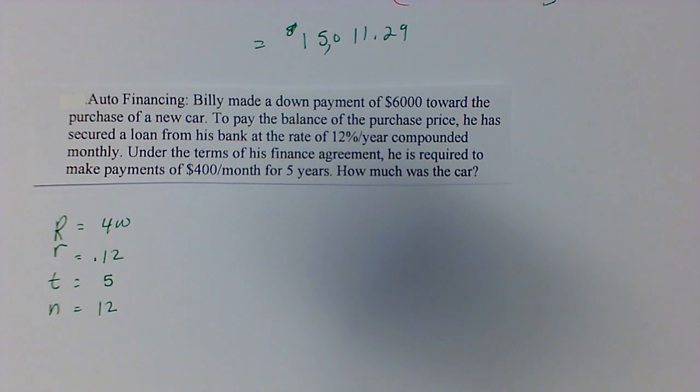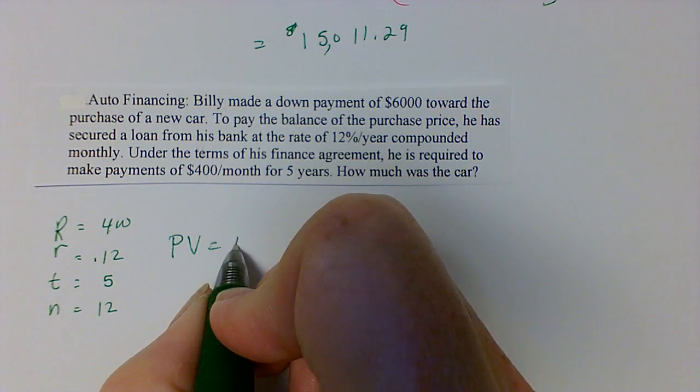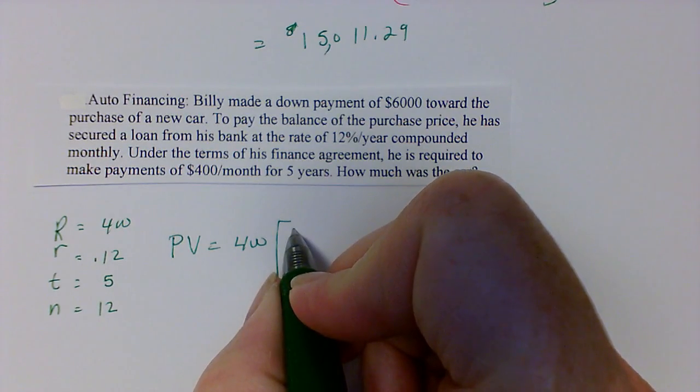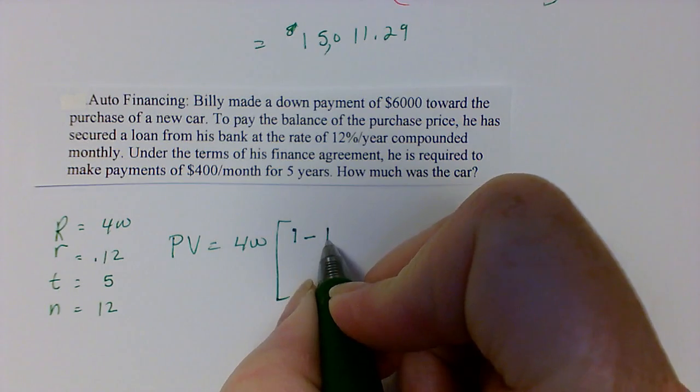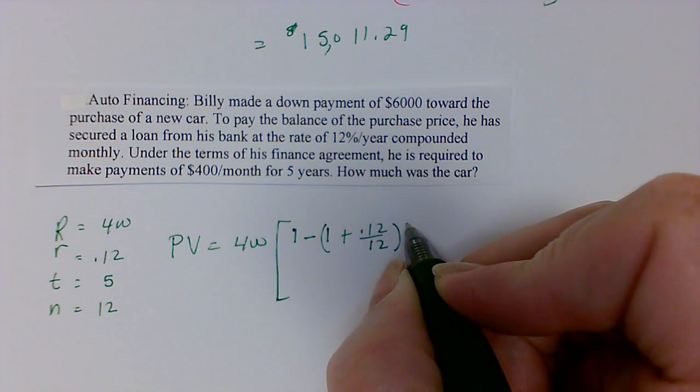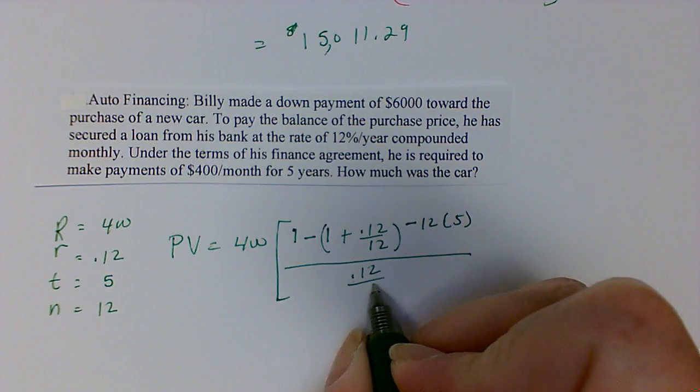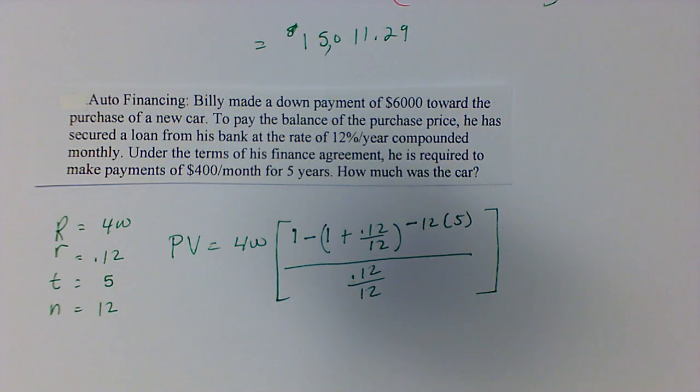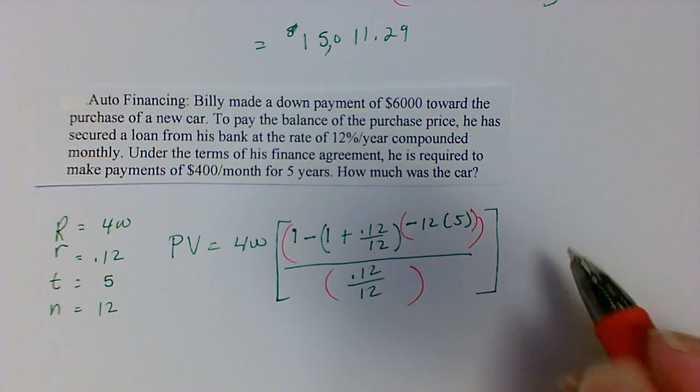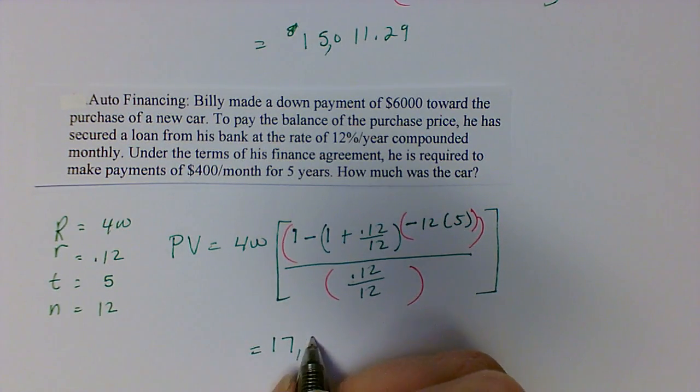So we need to plug those values in. PV is equal to 400 times 1 minus 1 plus 0.12 over 12 raised to the negative 12 times 5 all over 0.12 over 12. Remember, just like in the previous problem, you have to include parentheses for the entire numerator and denominator, and if you have a TI-83 or 84, you need parentheses to raise it to the power. When you plug this in, you should get the value of $17,982.02.